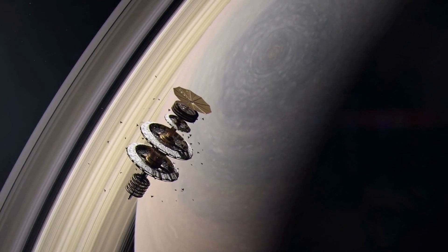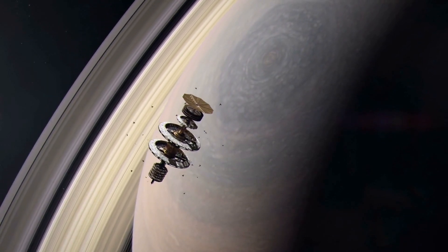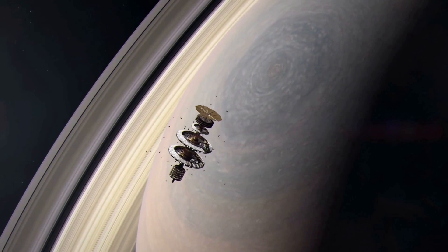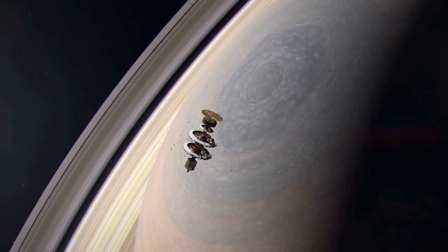The dynamics within the rings are governed by Saturn's moons. Some moons, known as Shepherd moons, orbit near the edges of the rings and help keep the particles in line.